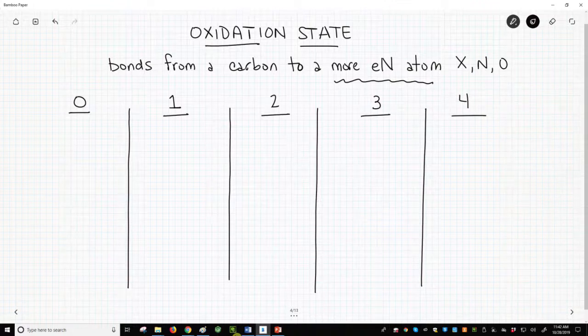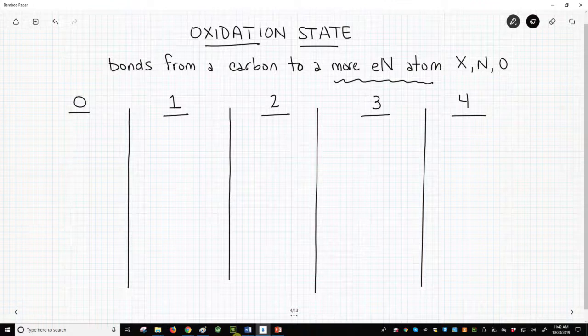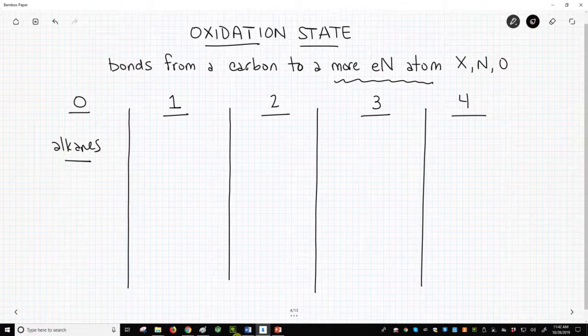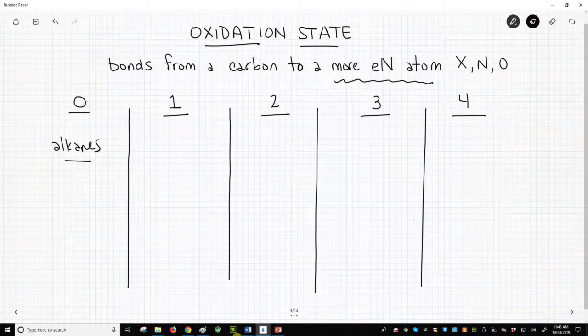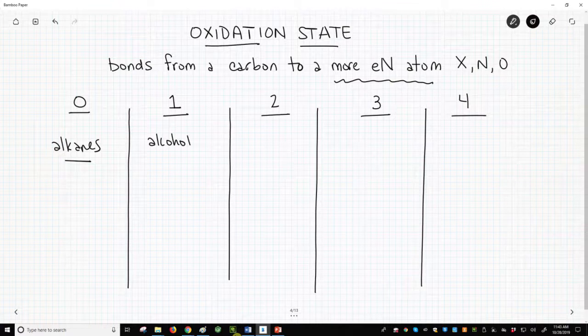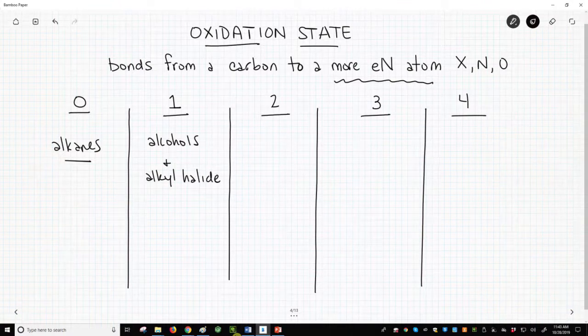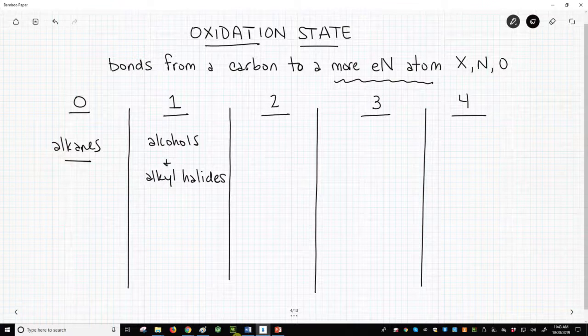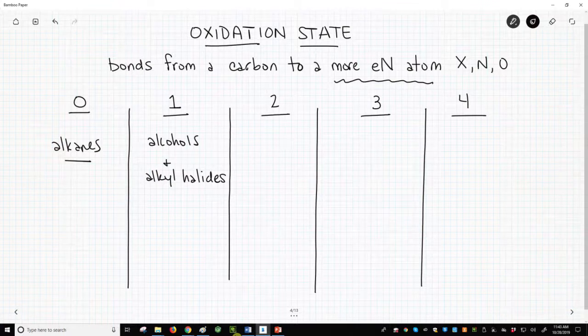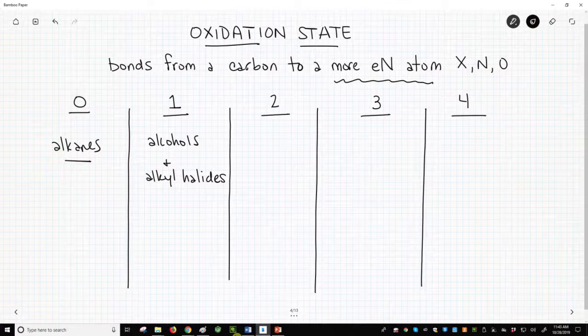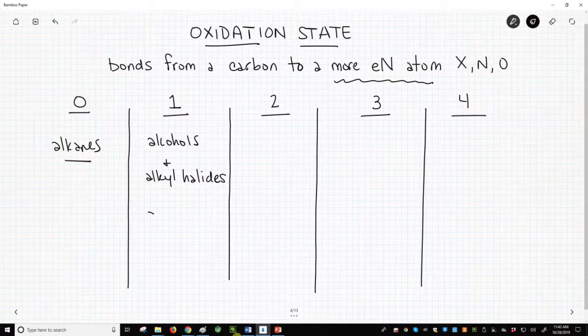Normally, before hitting carbonyl chemistry, students will have seen alkanes, which have carbons with no bonds to an electronegative atom. Students will have also seen alcohols and alkyl halides, which have one electronegative atom bond to carbon. Interestingly, in this same group, most people would include alkenes.